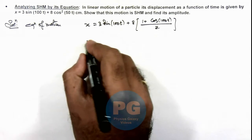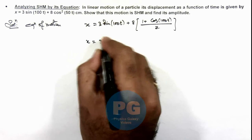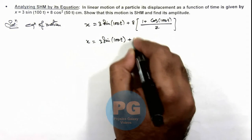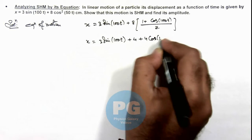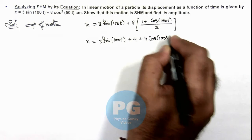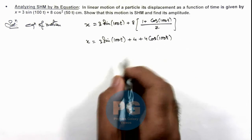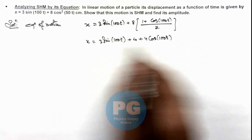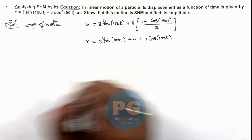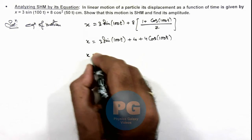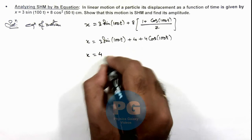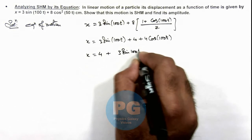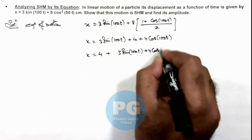Further opening this, we get x equals 3 sine of 100t, plus 4 plus 4 cos of 100t. In this situation, 4 is a constant term, and the remaining trigonometric terms with argument 100t can be written together. So this is 4 plus 3 sine of 100t plus 4 cos of 100t.